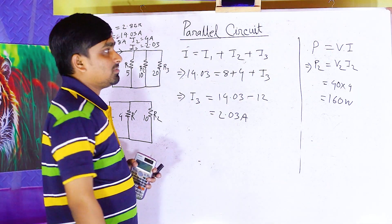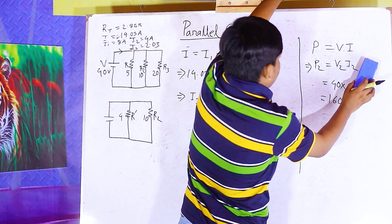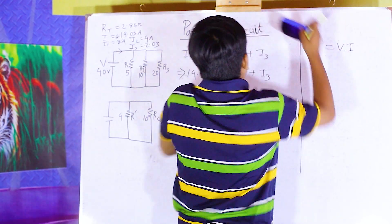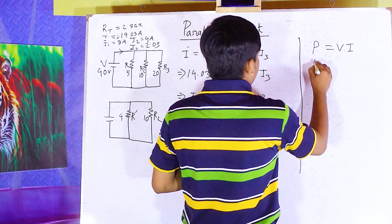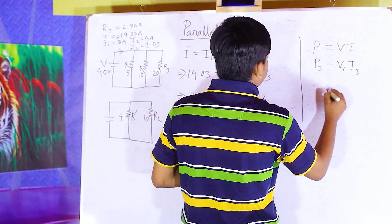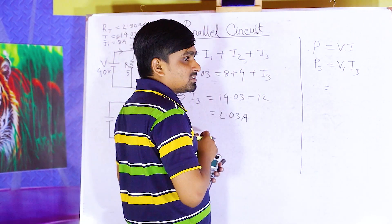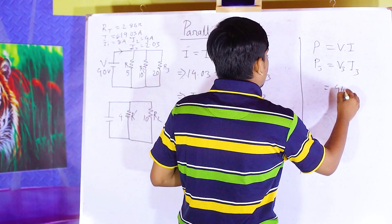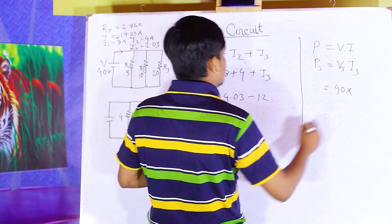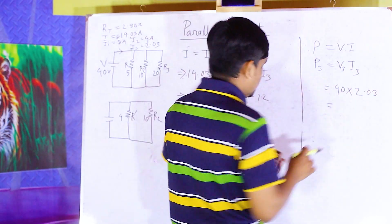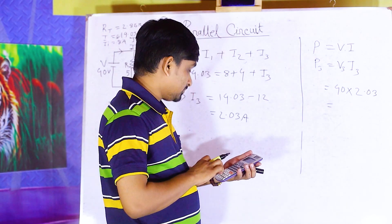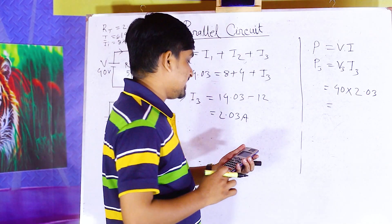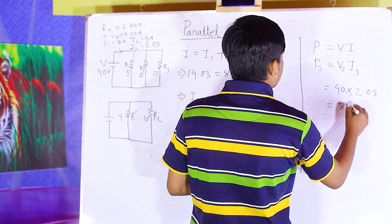Now, applying P equals V times I, we calculate power. P3 equals V3 multiplied by I3. The third resistor voltage, in a parallel circuit, equals the supply voltage, so 40 volts. I3 is 2.03 ampere. Therefore, P3 equals 40 into 2.03, which gives 81.2 watts.